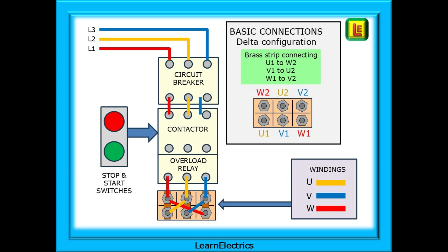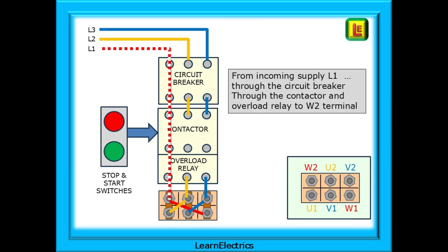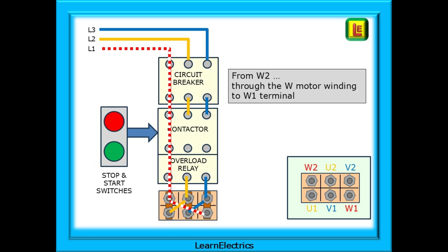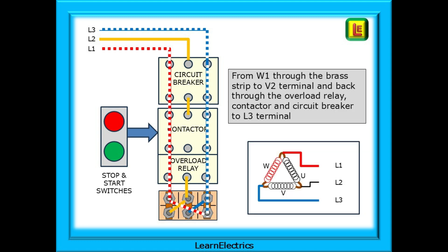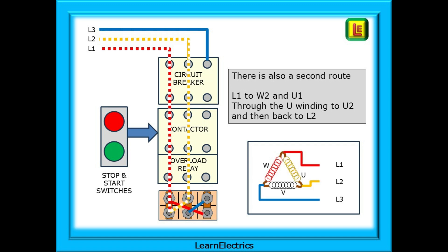Shown here are the connections for a delta configuration. Three brass strips are arranged across the block connecting U1 to W2, V1 to U2, and W1 to V2. Let's follow the route of the electric from the circuit breaker at L1 and all the way back to L3. From the incoming supply at L1, current passes through the circuit breaker, then through the contactor and the overload relay to the W2 terminal on the motor block. From W2, the wiring goes into the motor through the W motor winding and then to the W1 terminal. From W1 through the brass strip to the V2 terminal and then back through the overload relay, the contactor, and the circuit breaker to the L3 terminal at the distribution board. There is also a second route: L1 to W2 and along the brass strip to U1, through the U winding to U2, and then back to L2.